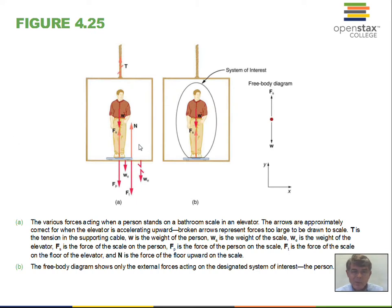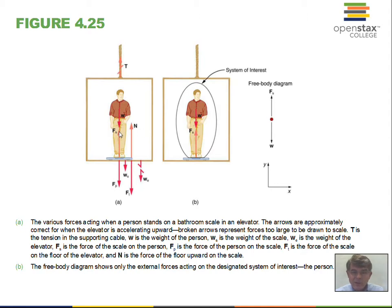A person in an elevator — here we see more third law forces illustrated. For the person, there's a weight downward; this person would also be pulling up on the Earth, but we don't show that. The spring scale is pushing up on the person; the person is pushing down on the spring scale — that's a third law pair. There's also the normal force of the elevator floor pushing up on the spring scale and the spring scale pushing down on the floor. When we want to calculate something involving the person, we draw a free body diagram with only forces acting on the person.